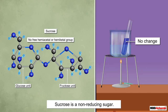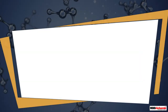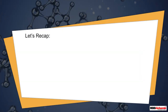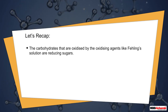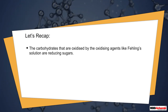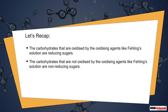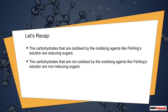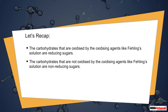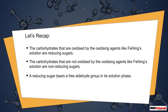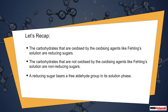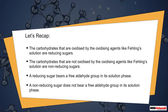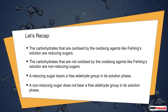That is why sucrose is a non-reducing sugar. Let's recap: the carbohydrates that are oxidized by oxidizing agents like Fehling's solution are reducing sugars. The carbohydrates that are not oxidized by oxidizing agents like Fehling's solution are non-reducing sugars. A reducing sugar bears a free aldehyde group in its solution phase. A non-reducing sugar does not bear a free aldehyde group in its solution phase.